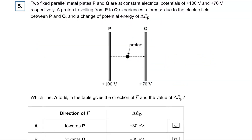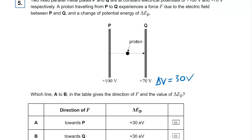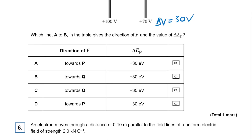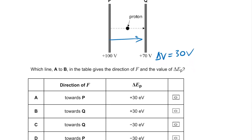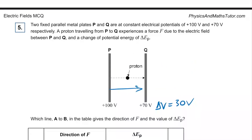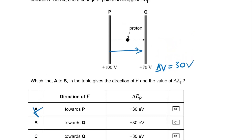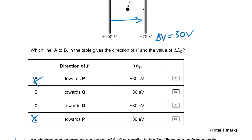Question five: two fixed parallel plates P and Q at 100 volts and 70 volts — the potential difference is 30 volts. The field lines go from higher to lower potential, so the force on the proton is towards Q. Since the proton is moving towards Q it is gaining kinetic energy, which means it's losing potential energy. Therefore the change in potential energy is minus 30 electron volts.